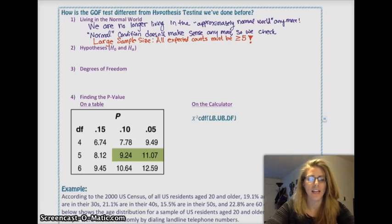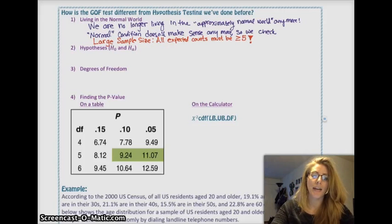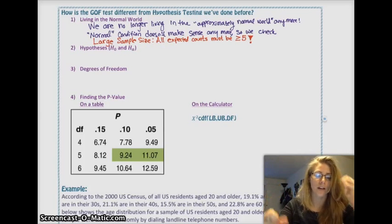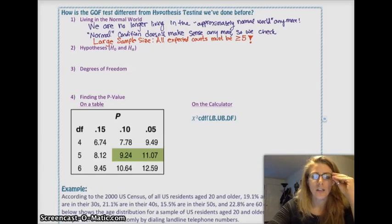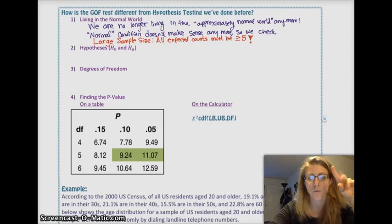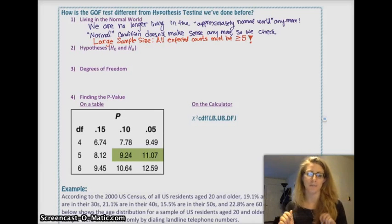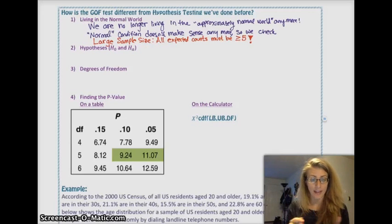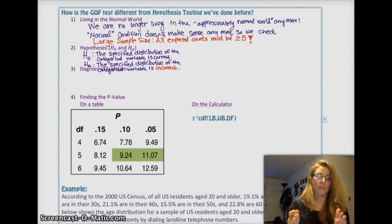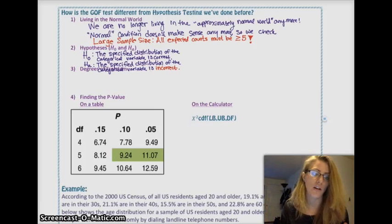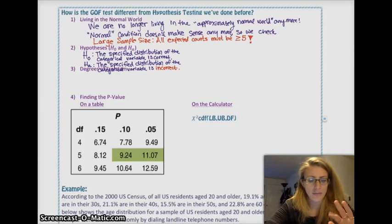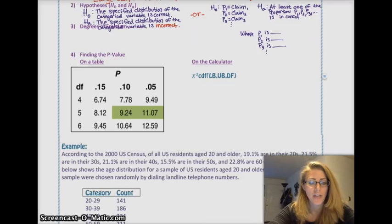For hypotheses, instead of saying a proportion equals a claim, you now have a distribution of proportions. You have two options: you can write out that the distribution of colors Hershey claims is true — the alternative is that it's not true. Or you can list out the actual proportions with the specific numbers, as long as you define what those parameters are. Degrees of freedom is the number of categories minus 1.